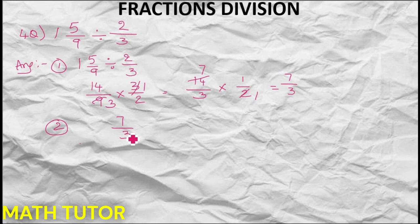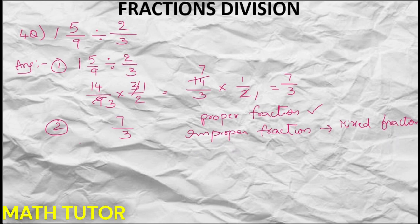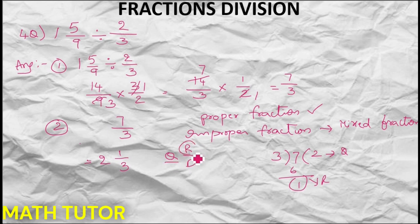Now check: is 7 by 3 a proper or improper fraction? It is an improper fraction, so we must convert it to a mixed fraction. 7 divided by 3: how many times does 3 go into 7? It goes 2 times with a remainder of 1. So the answer is 2 and 1 by 3 — in the form of quotient, remainder by denominator.